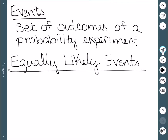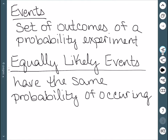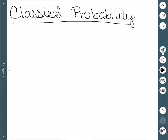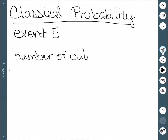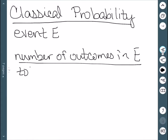The first type of events we want to consider are called equally likely events, which have the same probability of occurring — for example, flipping a coin, where heads and tails have an equal chance of coming up. The first type of probability we'll look at is called classical probability. If we have an event E, our probability is given by the number of outcomes in E — how many different ways we could get E — divided by the total number of outcomes that we could have.